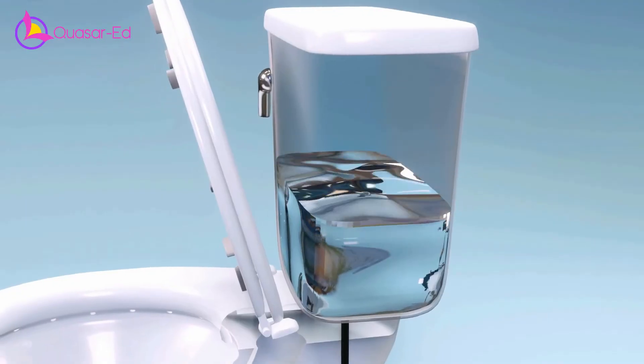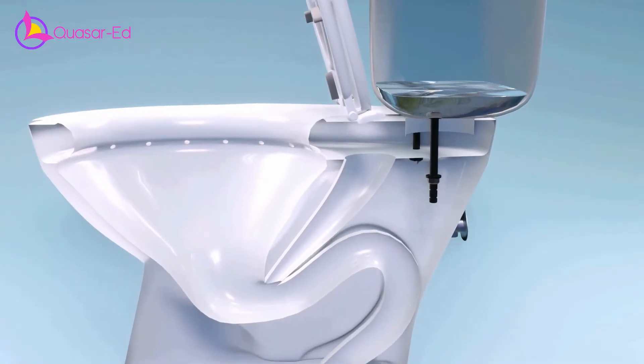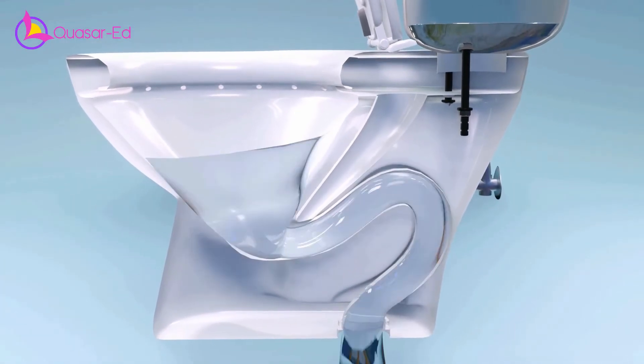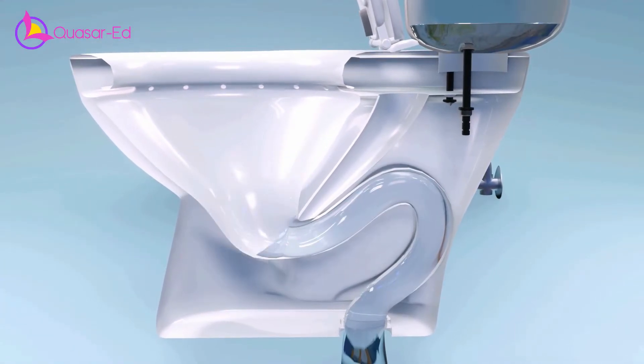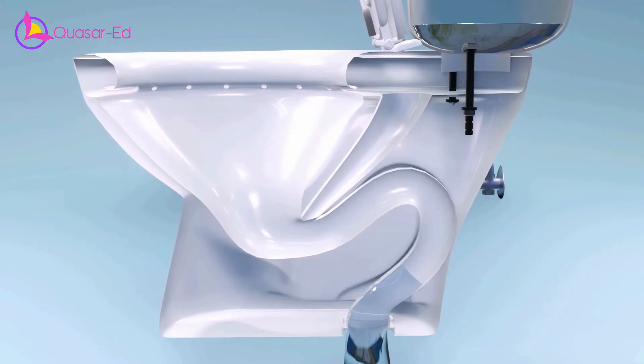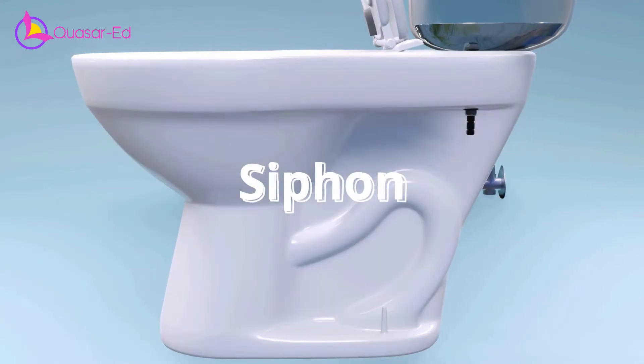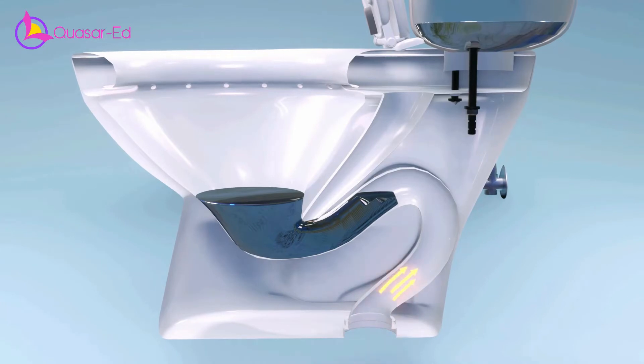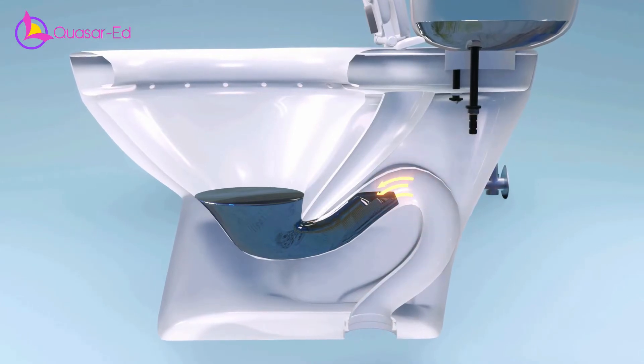It is also the reason why we need about two gallons of water to flush completely. This way of pumping water from higher reservoir to lower reservoir through an upward curve is called siphoning. The U-shape part of the S-curve is for holding water inside the bowl and it prevents smell from releasing.